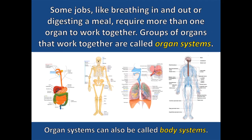Some jobs, like breathing in and out or digesting a meal, require more than one organ to work together. Groups of organs that work together are called organ systems. The digestive system, skeletal system, respiratory system, and nervous system all contain multiple organs. It's important to understand that organ systems can also be called body systems.